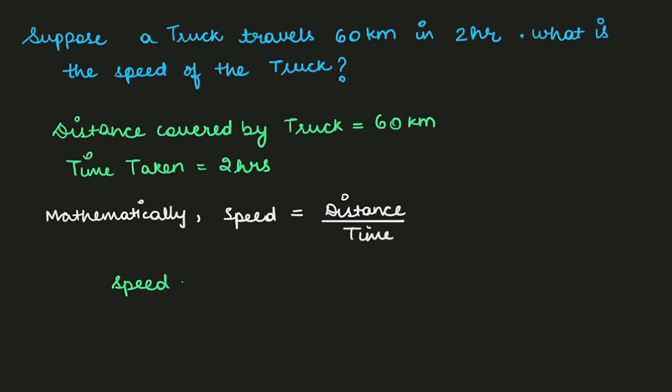Speed of truck equals to distance traveled by the truck. How much distance traveled by the truck? 60 kilometer. So 60 upon, and how much time taken by the truck? 2 hours. So 60 upon 2 is 30, and what is the unit? Kilometer per hour. So the speed of the truck is 30 kilometer per hour. And this is how we find the speed if we are given distance and time. We can use this formula: speed equals to distance upon time, and calculate the speed.